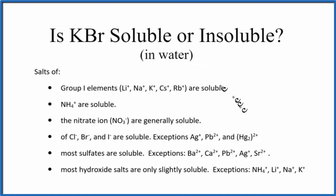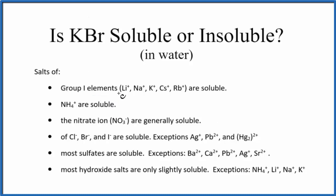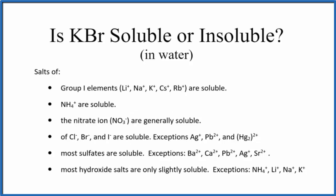Here's just a brief set of the most important solubility rules. As we look down, we see group 1 elements — group 1 on the periodic table. Those are going to be soluble, and potassium is in group 1, so we would expect KBr would be a soluble compound according to our rules here.